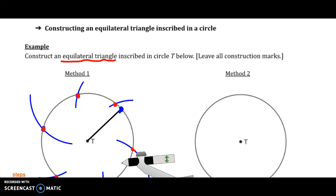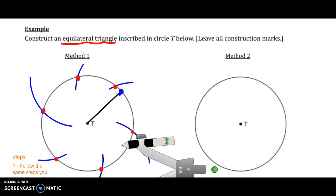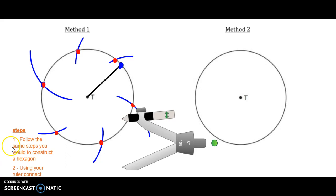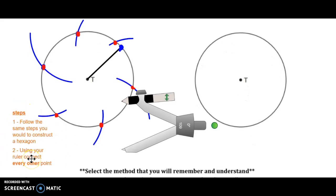This is unit 1 lesson 5, the video for constructing an equilateral triangle inscribed in a circle. There are two methods to inscribing an equilateral triangle in a circle. The method I recommend you use is the first method, for one you have to remember less things and so that makes it easier.